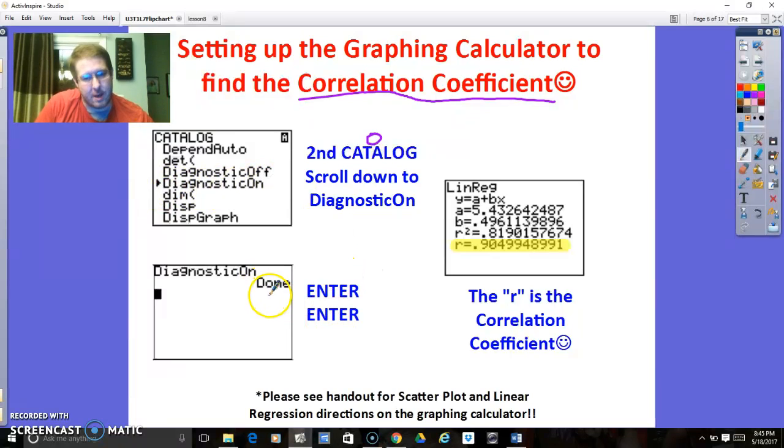Notice that above the zero in yellow it should say catalog. And then you're going to get a huge list of like 100 things. You scroll down to like the 30th one, which is diagnostics on. So put your little cursor right here. Press enter, enter, and it should say done on your screen. And now what you notice is when you press stat calculate 4, you used to do this to find the line of regression.